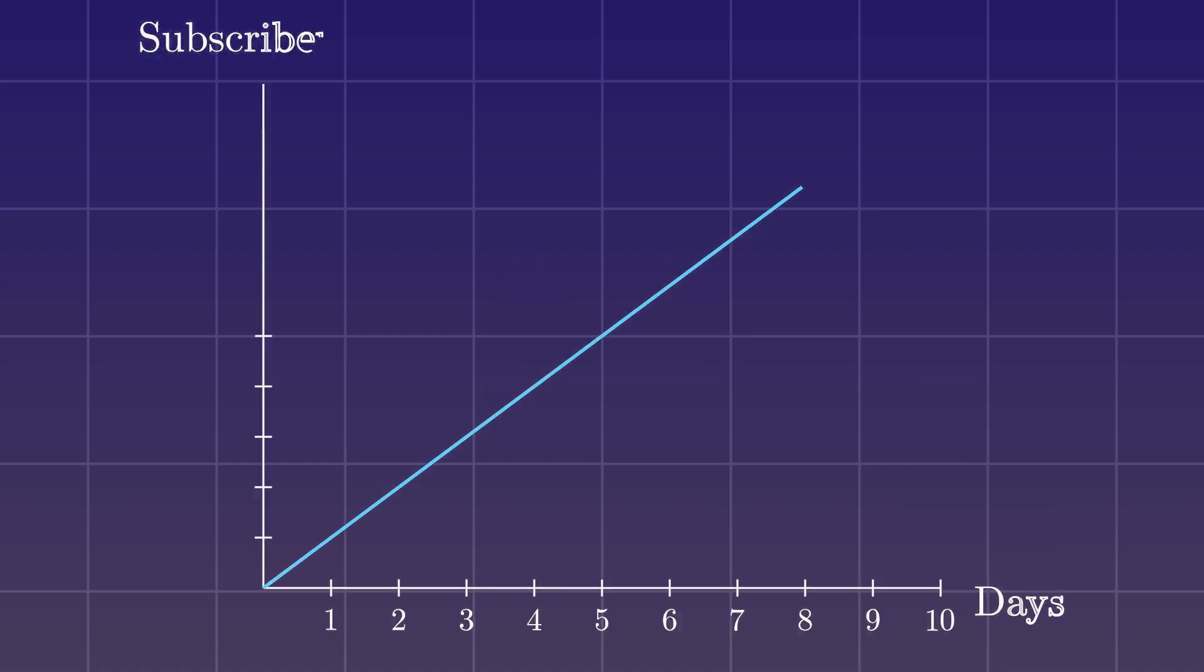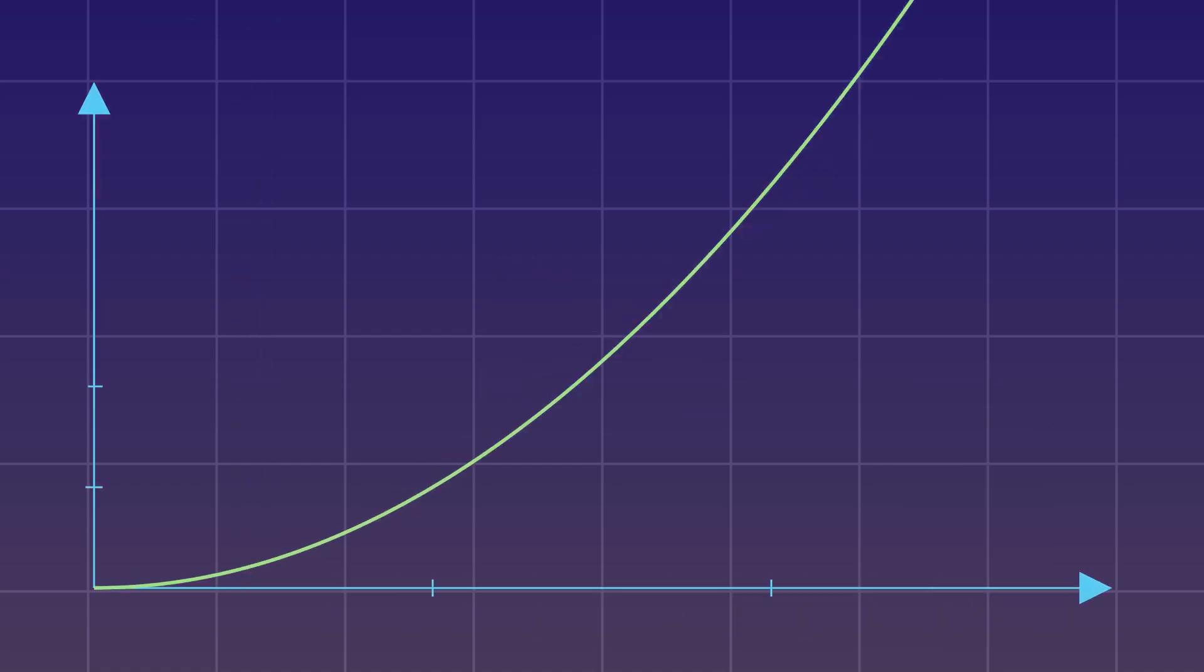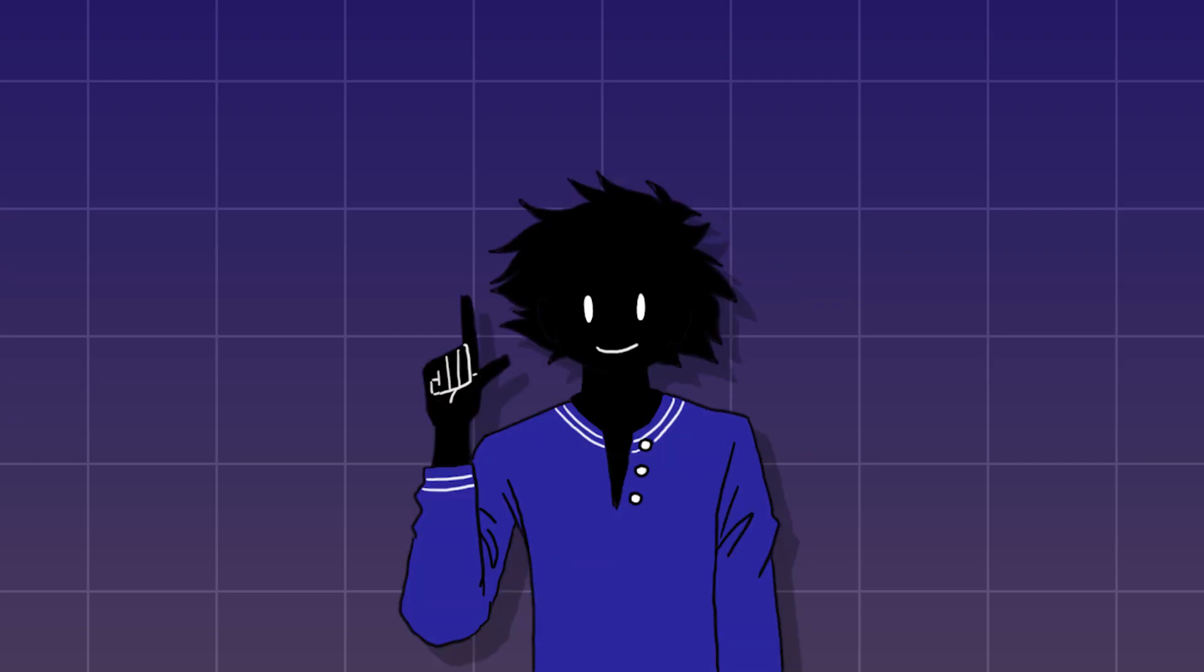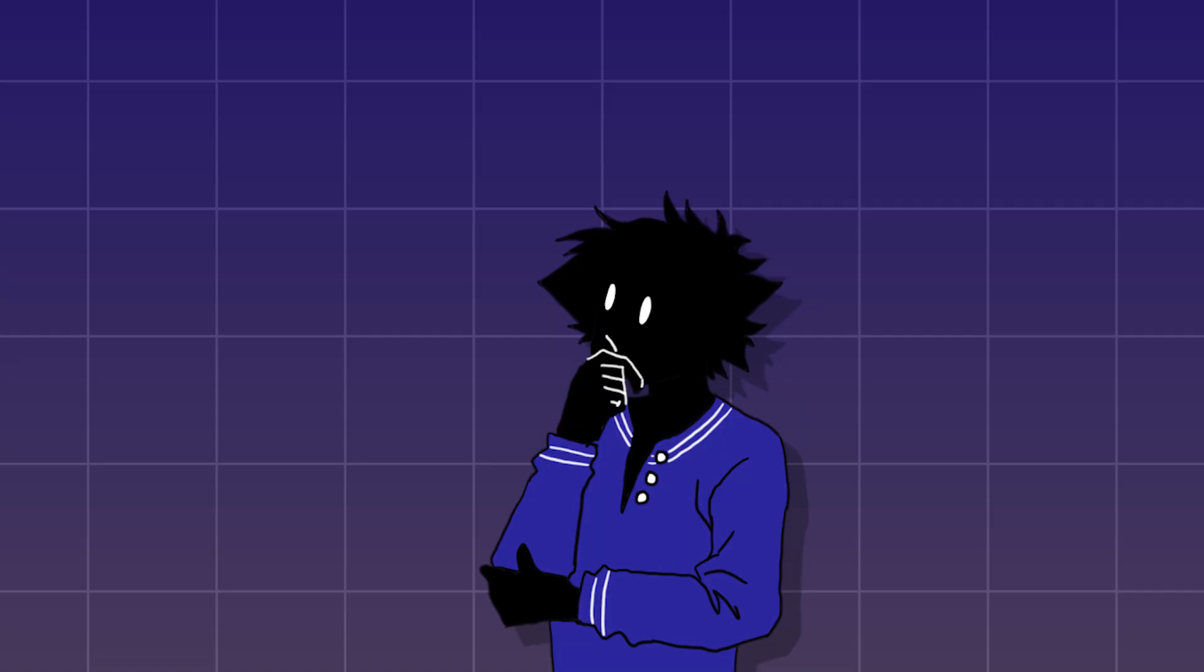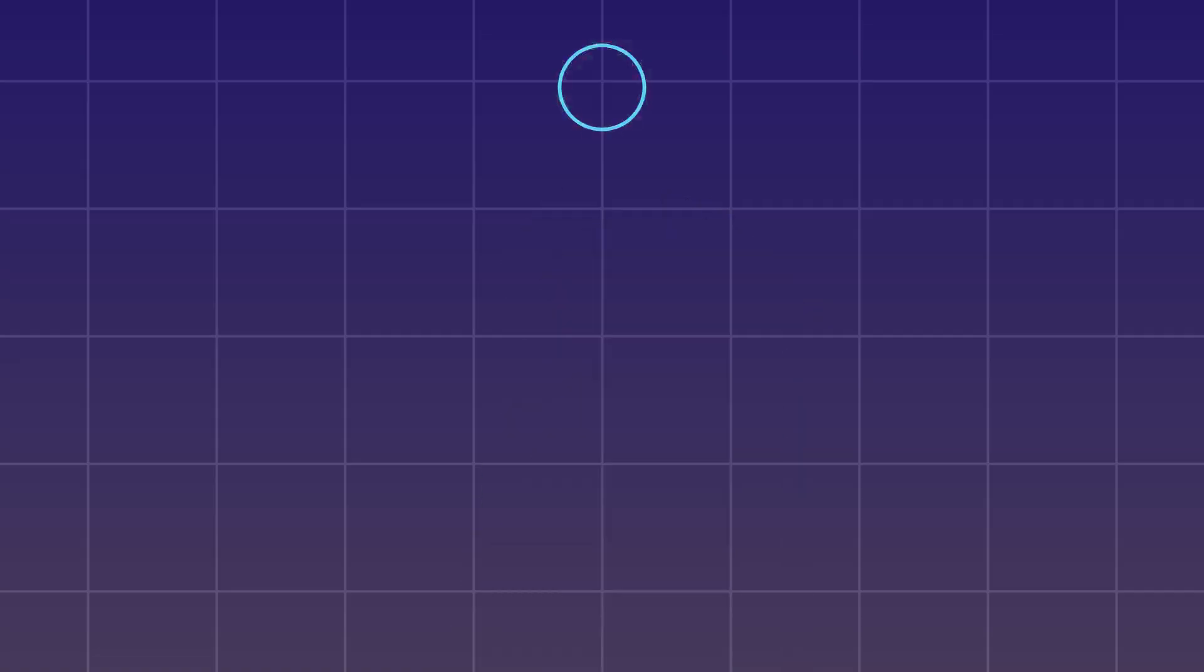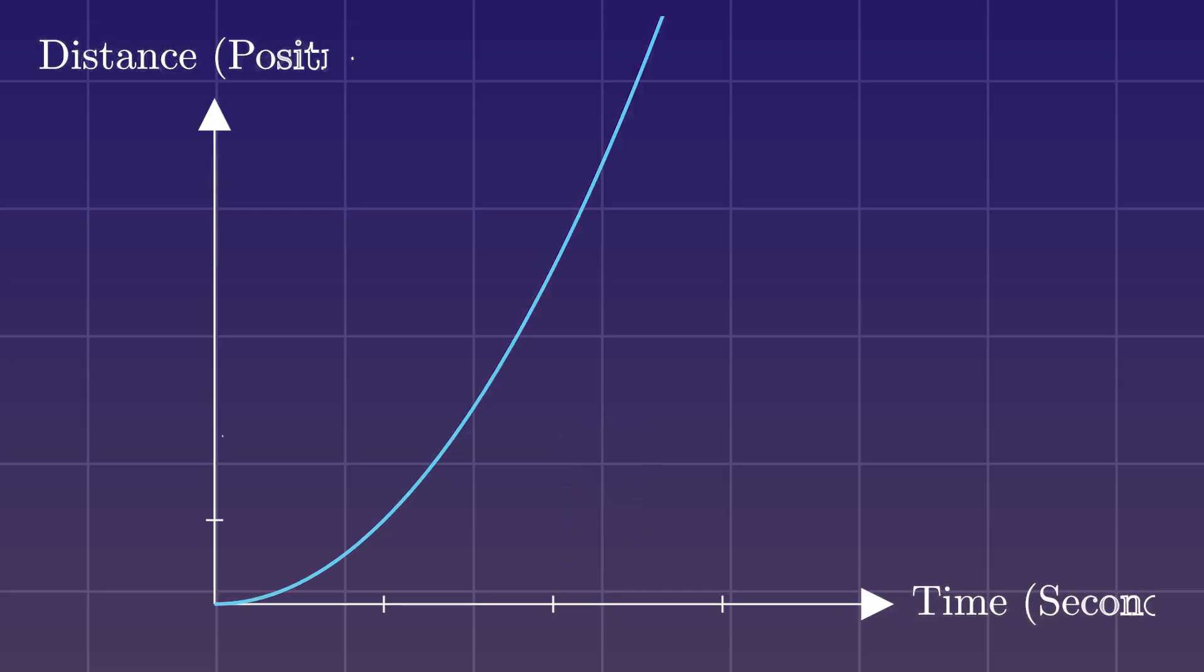Getting the rate of change was easy when your graph looks like this. However, what if your subscriber growth looked like this? In real life, things don't always grow at a constant rate. They sometimes speed up or slow down at different points in time. And what if you wanted to find the rate of change not over a long period of time, but a snapshot in time? If you drop a ball, it doesn't fall at a constant speed. It accelerates over time. Let's make a graph for the falling ball that looks like this.